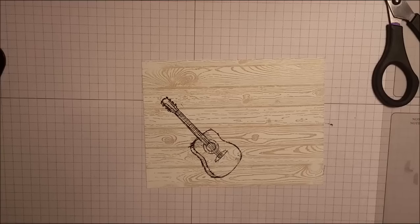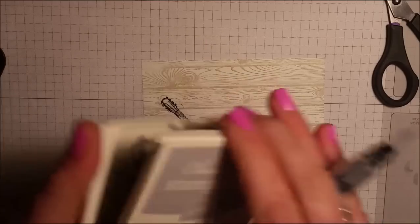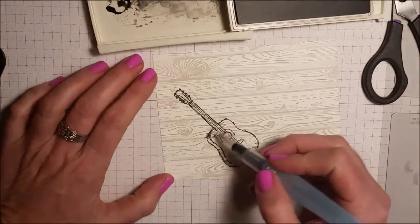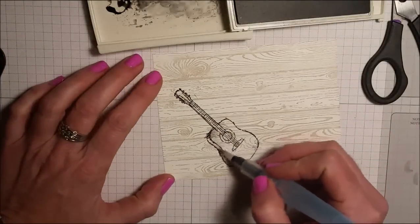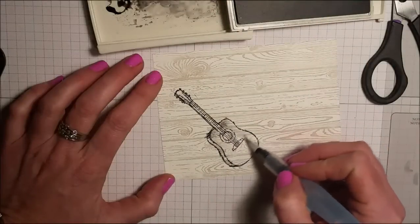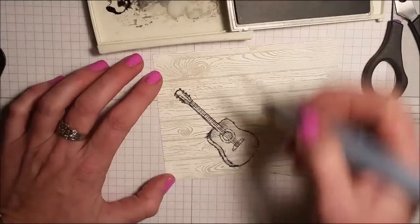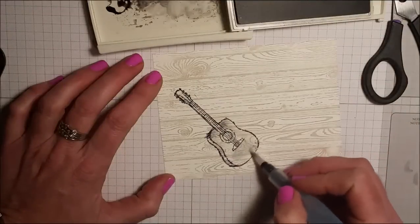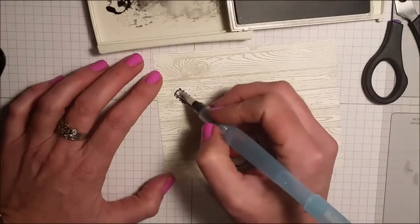I'm going to add a little bit of color. I'm going to use my smoky slate ink and my aqua painter and I'm just going to add a very light wash because you want that background, that wood grain, to show through the piece that's going to be popped up. So I'm just adding just a tiny bit of color.